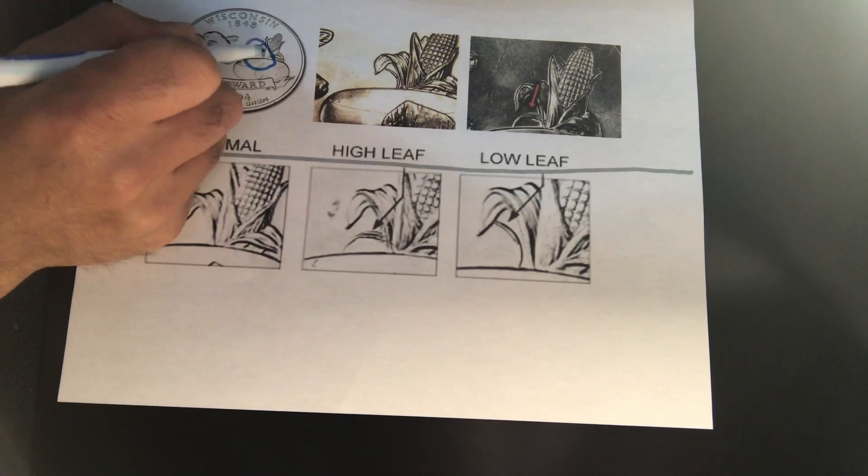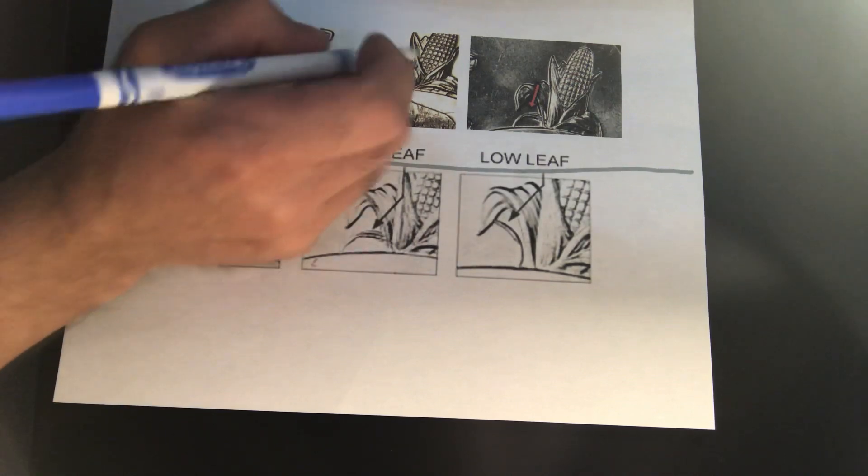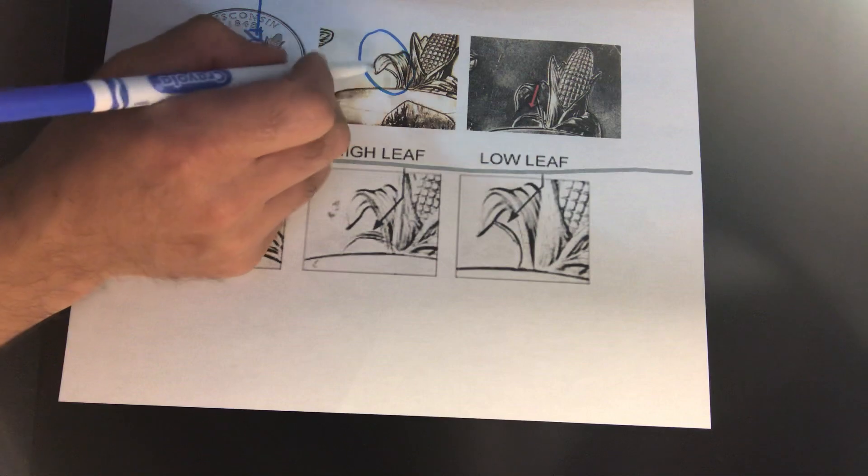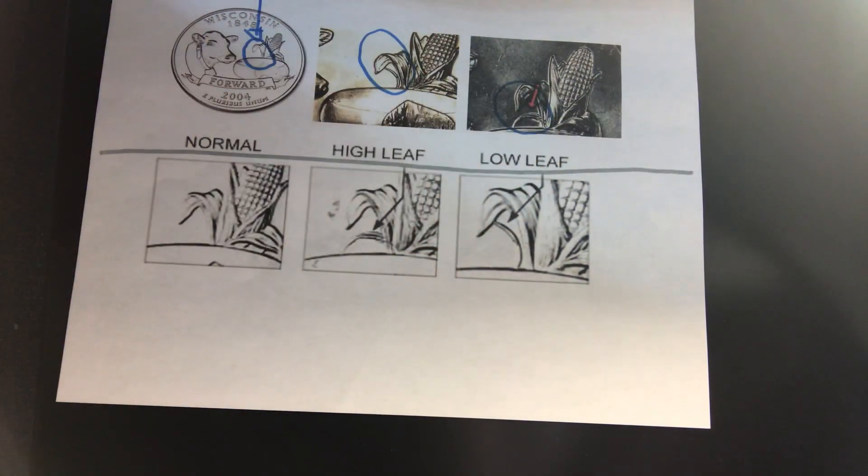Here, you're going to see a normal leaf. You have just one leaf in here. So, if you see an extra leaf right below the big leaf, that's what you're going to concentrate on.